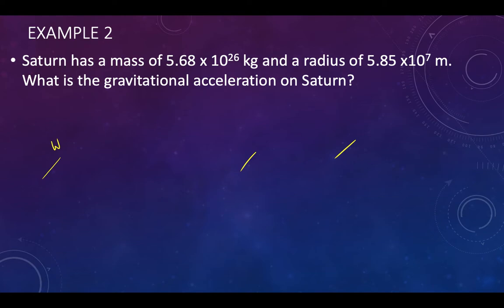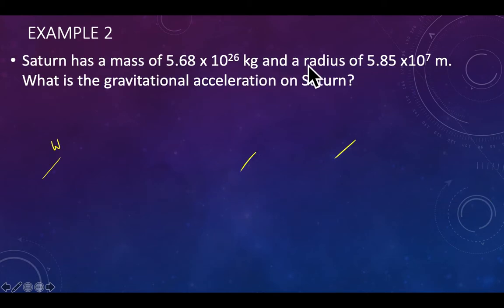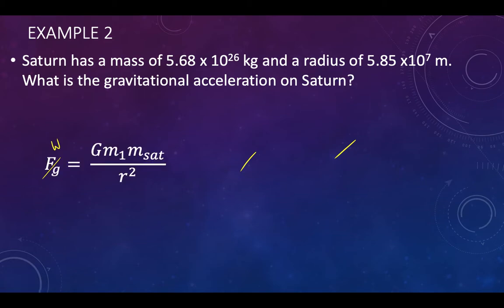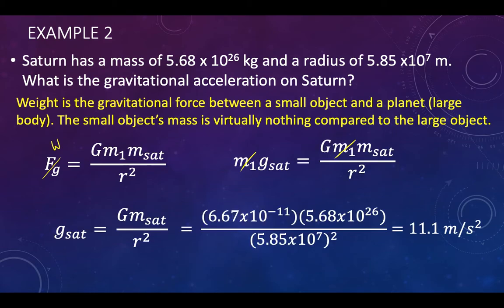Here's Saturn. Saturn has a mass larger than Earth's by a factor of about 10² — it's 10²⁶ kg — and its radius is also larger. By completing the calculation using G times Saturn's mass divided by Saturn's radius squared, we find that the gravitational field strength on Saturn's surface is about 11.1 m/s².